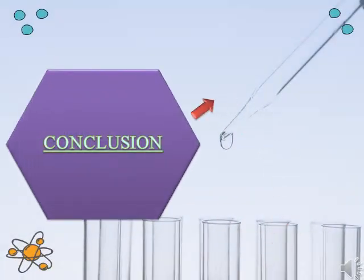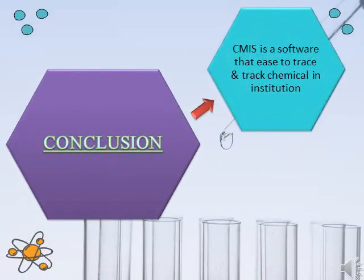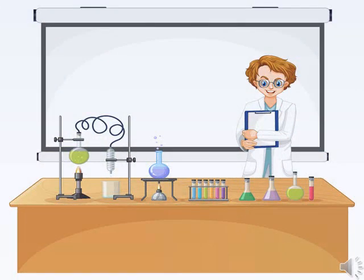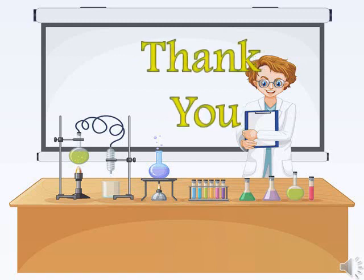In conclusion, CMIS is a software that makes it easy to trace and track chemicals in an institution. CMIS is a database that can help organize chemical inventory in an institution. We will try to use this in our lab soon. I will organize the software and will need information from students. Hope to get cooperation from all. Thank you.